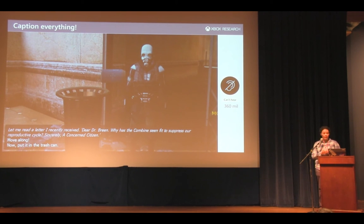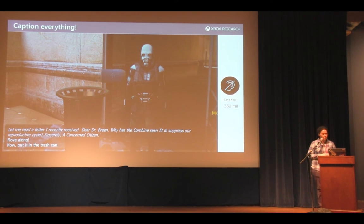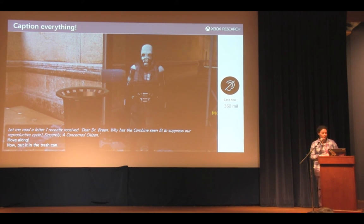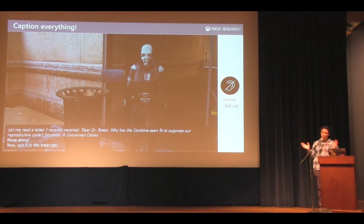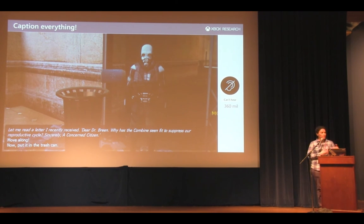Here's another example of captioning — this is from the game Half-Life 2. It shows a way to distinguish the different speakers talking in the game. The text in italics on the upper part is the voice-over narration happening in the game, and the text on the bottom in regular font is what is being said by the actual characters in the game.